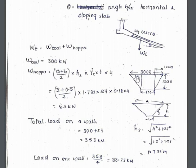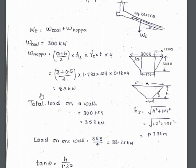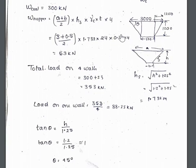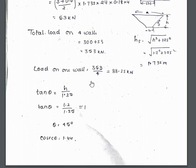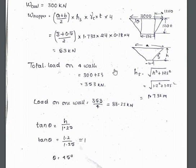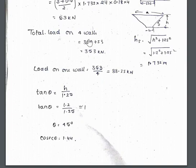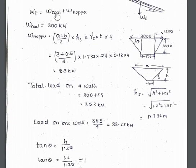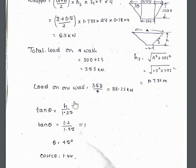This is the self-weight formula for the hopper. A is the top dimension, B is the bottom dimension of the hopper, and H is the height of the sloping side, which can be found by the Pythagoras theorem. Substituting all the values, we get the thickness of the hopper walls. The total load on the four walls is W_coal plus W_hopper, giving us 300 plus 53 = 353 kilonewtons.